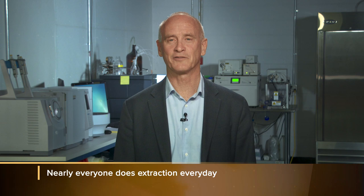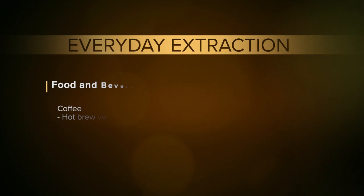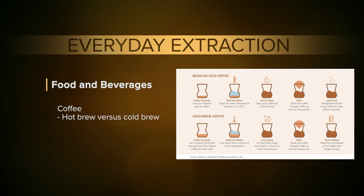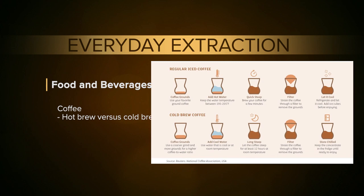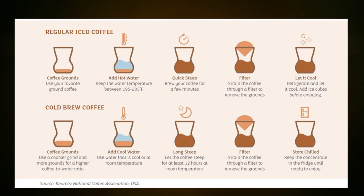Let's talk about natural products that you use every day, to make this less of a mystery. One thing we commonly do is make coffee. Coffee is a natural product — we extract the flavors and caffeine and add other components. There are a number of ways to make coffee: a cold brew or a hot brew. Each process is different. With a hot brew, you can make coffee in 5 to 10 minutes; with a cold brew, it can take 10 to 12 hours.